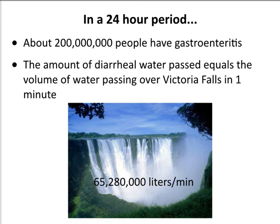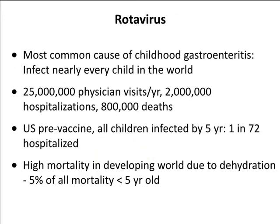In any 24-hour period, about 200 million people have gastroenteritis, and the amount of water they pass is equal to what passes over Victoria Falls in one minute — just over 65 million liters. I'm going to talk about two viruses that cause gastroenteritis: rotavirus and norovirus.